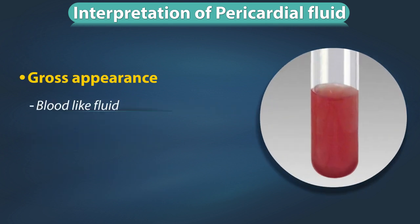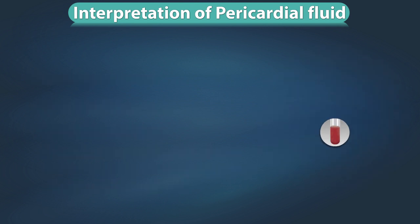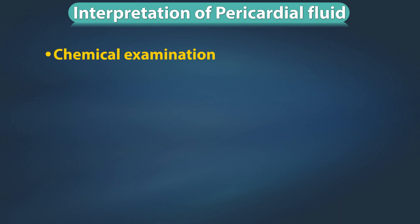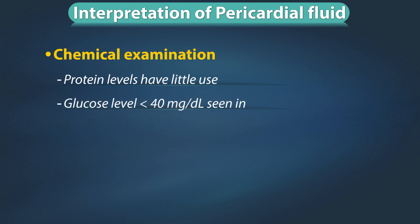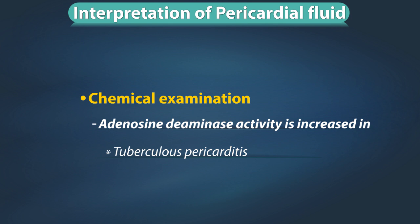Blood-like fluid indicates either a hemorrhagic effusion or blood from the heart chamber; check the hematocrit — it will be the same as that of venous blood and will clot in case of blood from the heart chamber. Chemical examination: protein levels have very little use. Glucose level less than 40 mg per deciliter can be seen in bacterial, tubercular, rheumatic, and malignant effusions. Adenosine deaminase activity is increased in tubercular pericarditis.